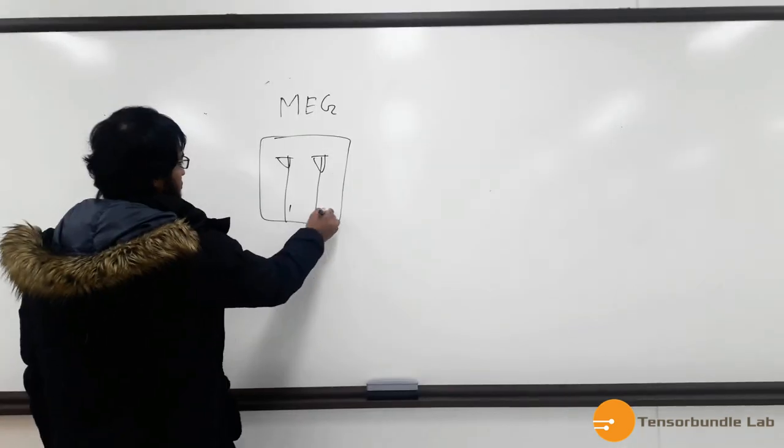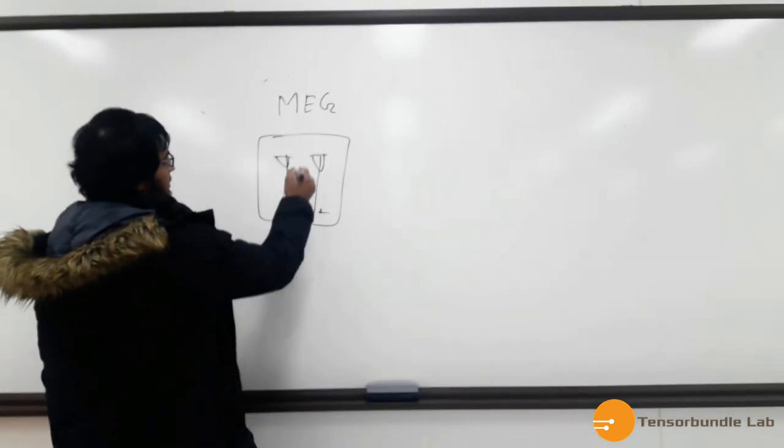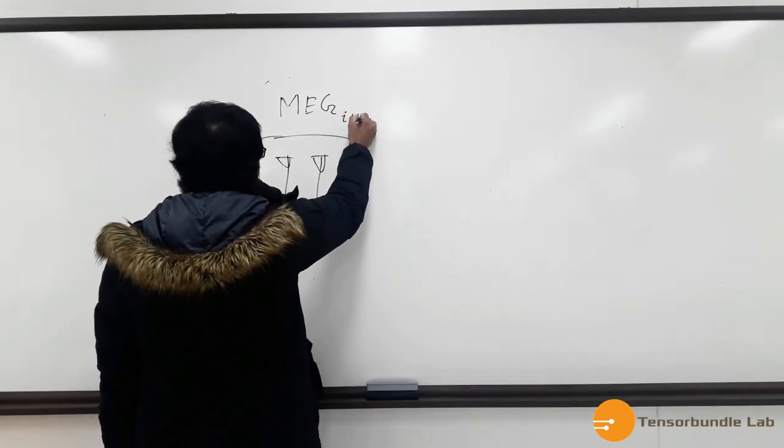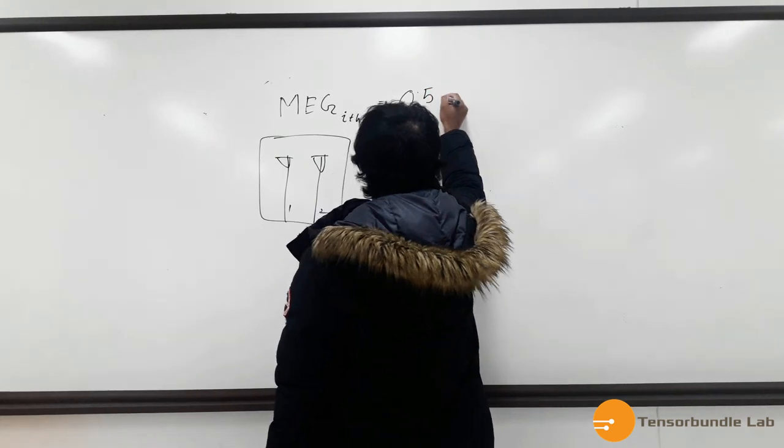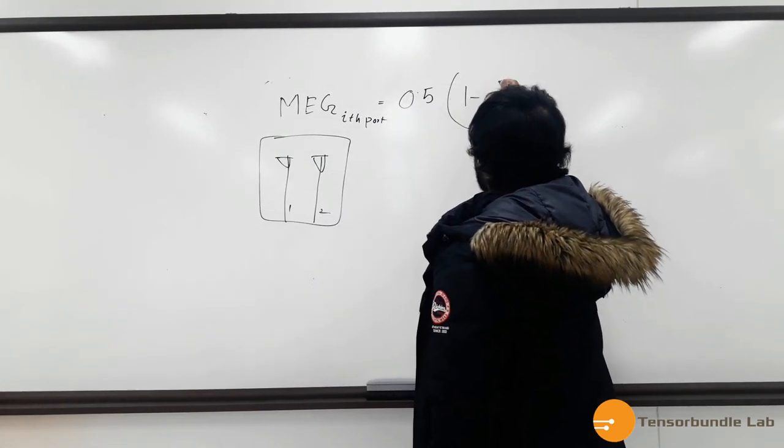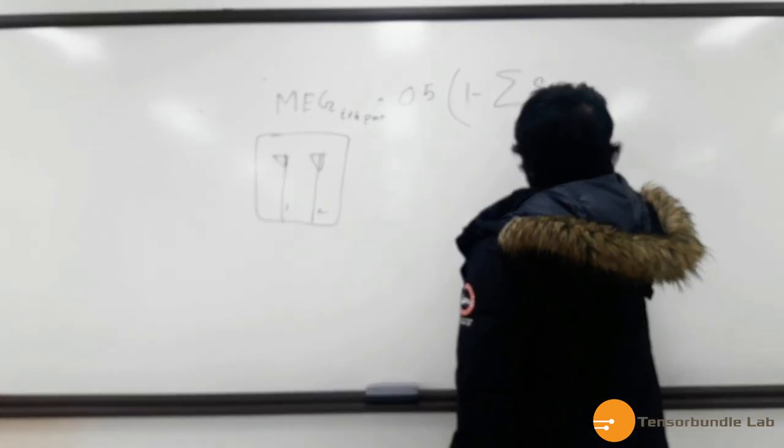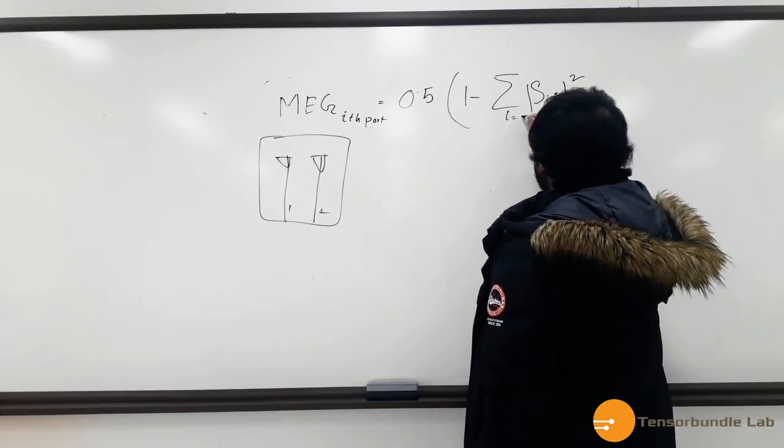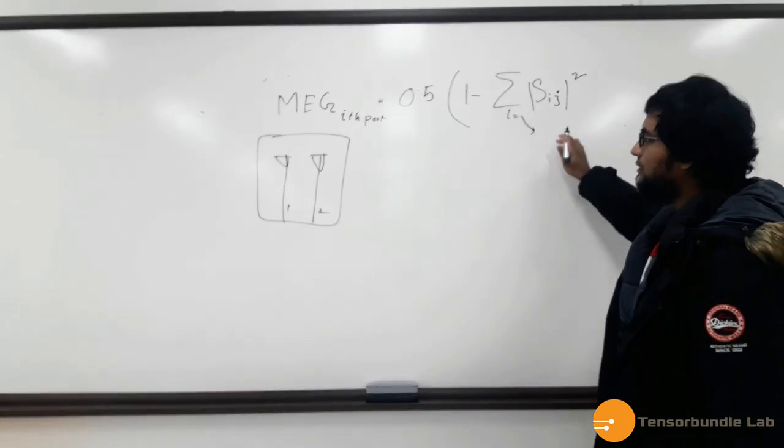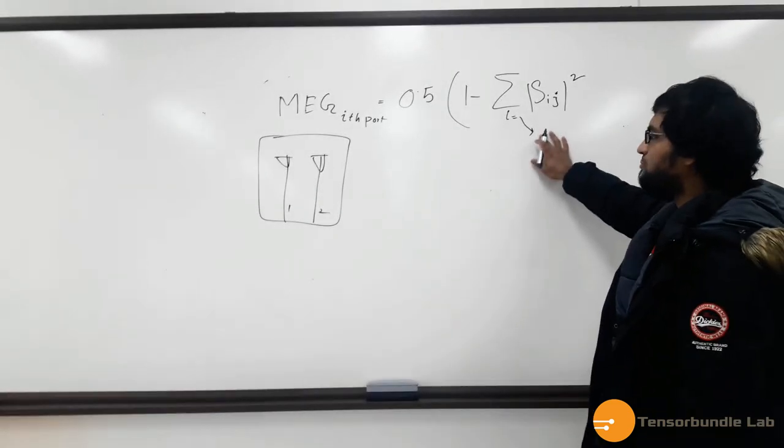For example, this is port one, port two, and MEG for the i-th port can be defined as 0.5 times 1 minus sum over j from 1 to N of modulus of Sij squared. i is the i-th number of ports.